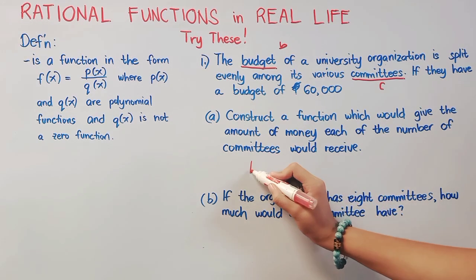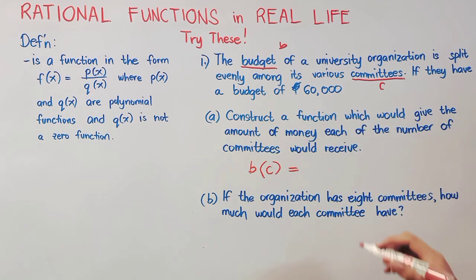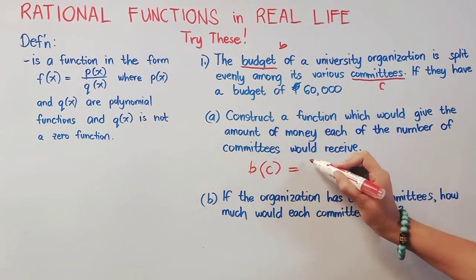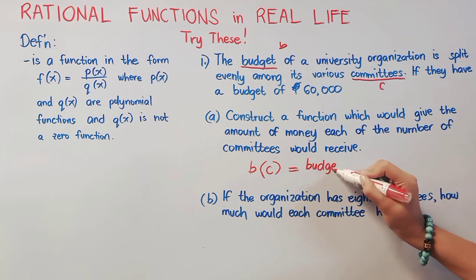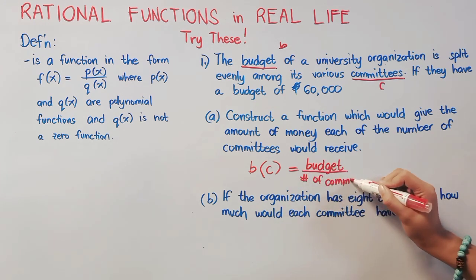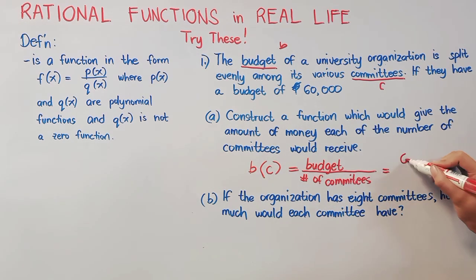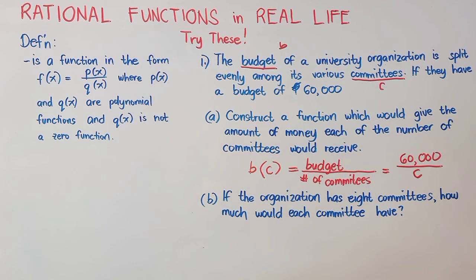So, our function here is the budget in terms of the number of committees. So, our budget will be divided equally to the number of committees that the university organization have. Now, our budget is fixed at 60,000, and we don't know yet the number of committees, so we'll just have to place C.